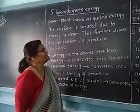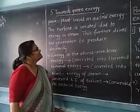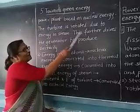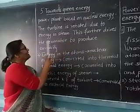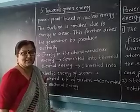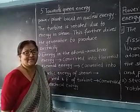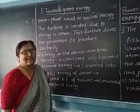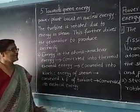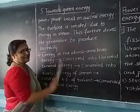Whenever the steam is created, it rotates the turbine, and this further drives the generator to produce electricity. After the flow of steam onto the turbines, the generator generates electricity. The energy in the atoms — through fission of nuclei of uranium or plutonium — initiates this entire process.